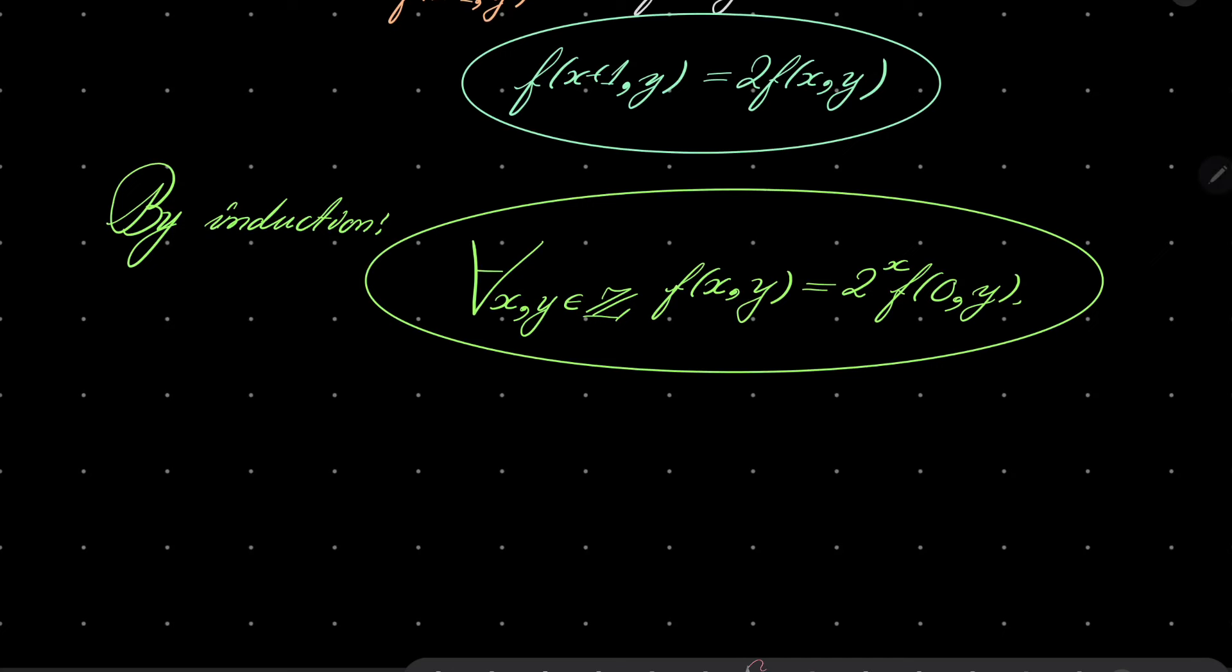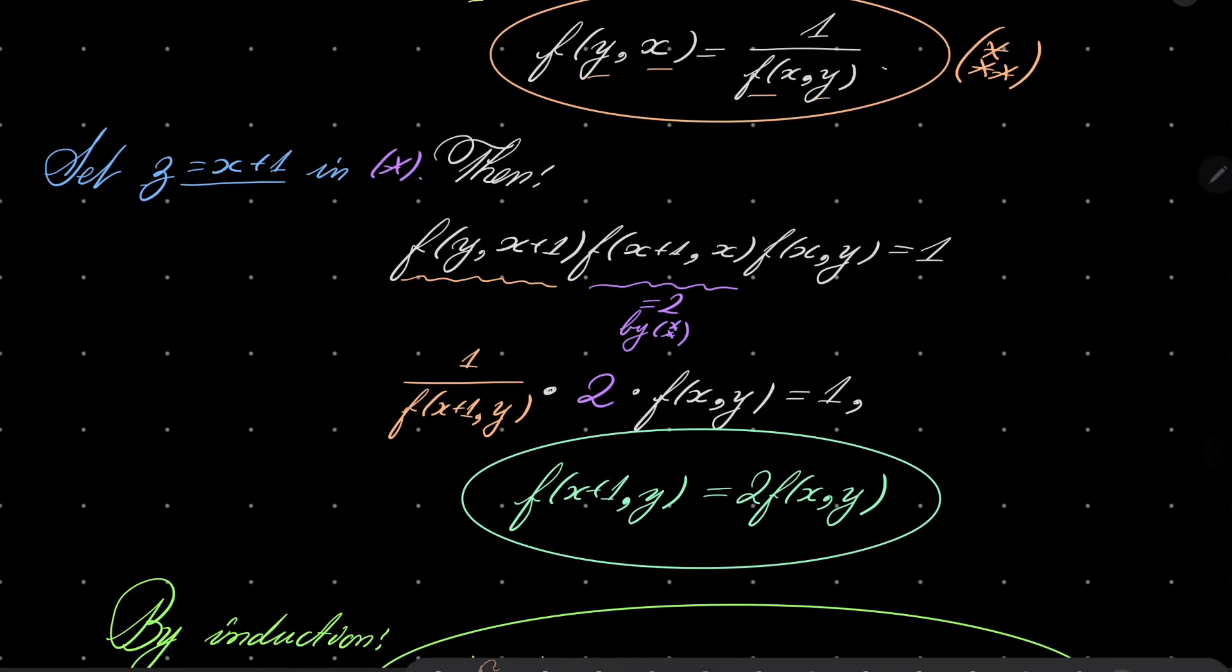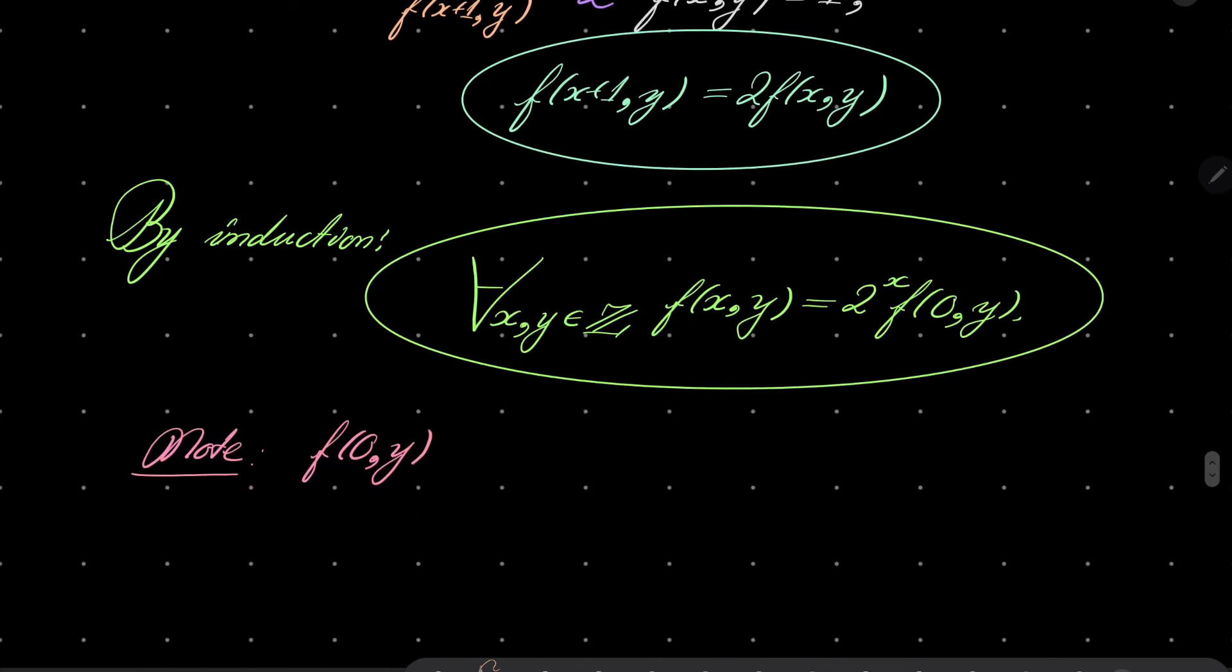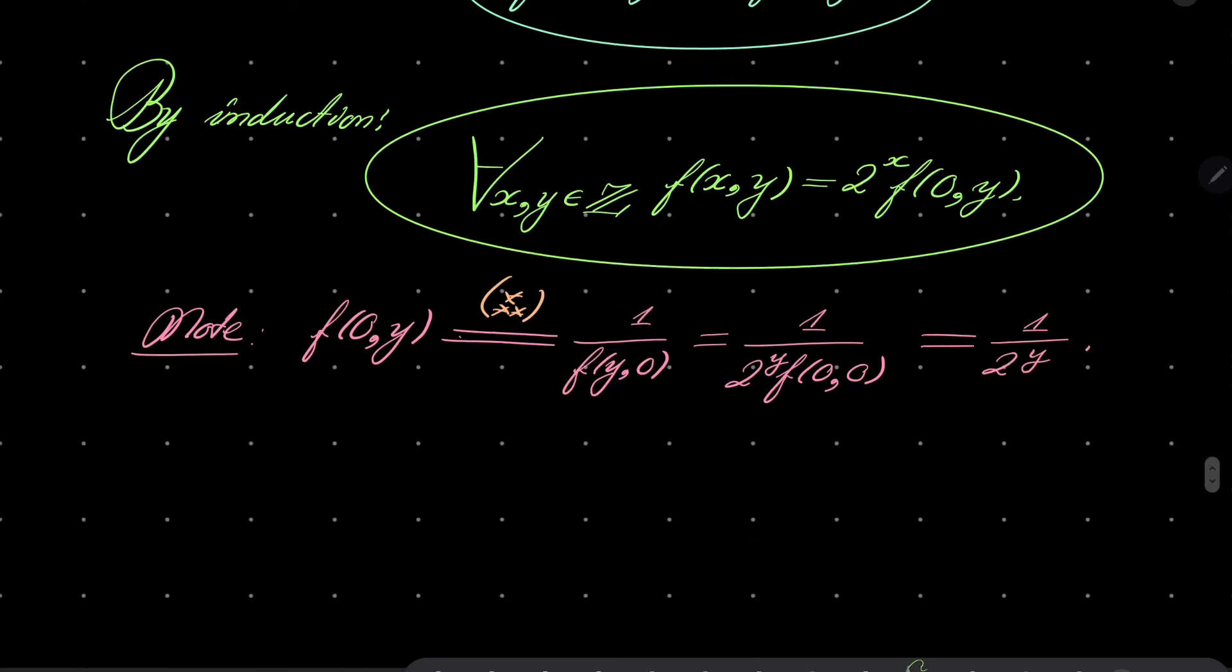actually, it's pretty easy because note, note now that f(0,y) using one of the properties, I believe using property the triple asterisk, we can change the order of arguments. We can change the order of arguments, but we have to invert. So by triple asterisks we will get 1 over f(y,0). But using this equation, which is highlighted above, f(y,0), it's just 2 to the power of y, f(0,0). And what is f(0,0)? Well, remember that f(x,x) is every time is 1.